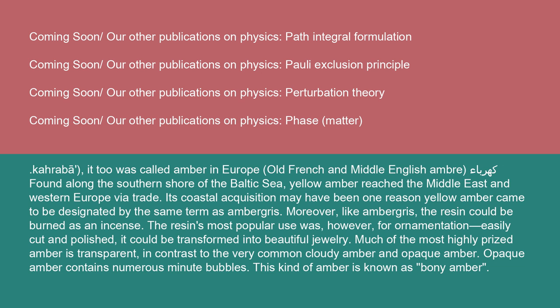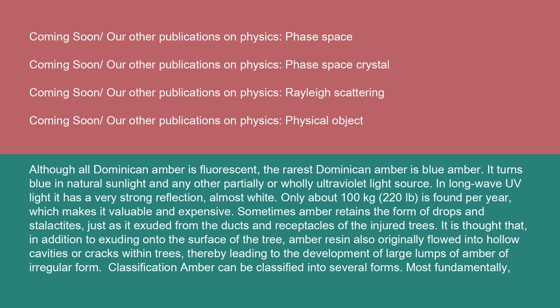Much of the most highly prized amber is transparent, in contrast to the very common cloudy amber and opaque amber. Opaque amber contains numerous minute bubbles; this kind of amber is known as bony amber. Although all Dominican amber is fluorescent, the rarest Dominican amber is blue amber. It turns blue in natural sunlight and any other partially or wholly ultraviolet light source. In long-wave UV light, it has a very strong reflection, almost white. Only about 100 kilograms (220 pounds) is found per year, which makes it valuable and expensive. Sometimes amber retains the form of drops and stalactites, just as it exuded from the ducts and receptacles of the injured trees. It is thought that, in addition to exuding onto the surface of the tree, amber resin also originally flowed into hollow cavities or cracks within trees, thereby leading to the development of large lumps of amber of a regular form.